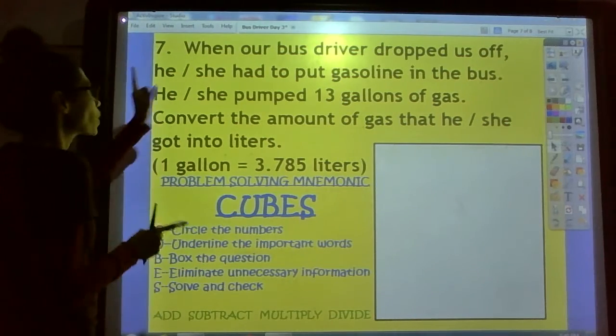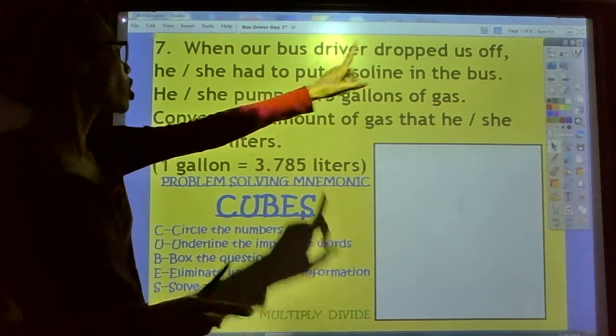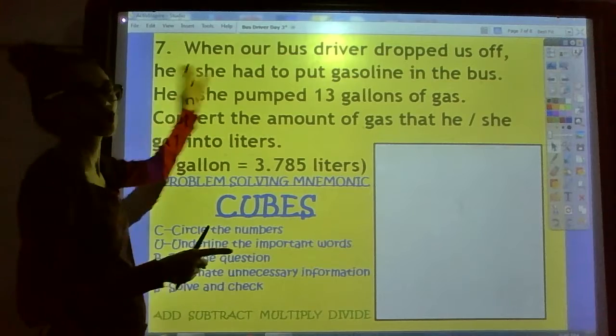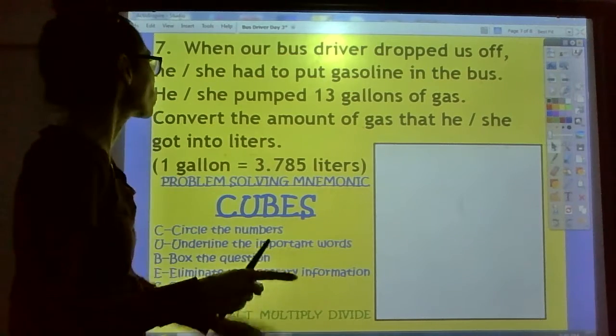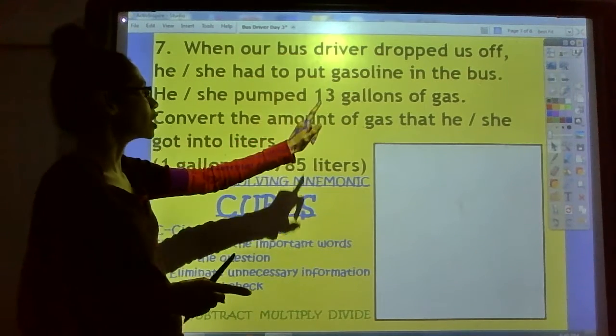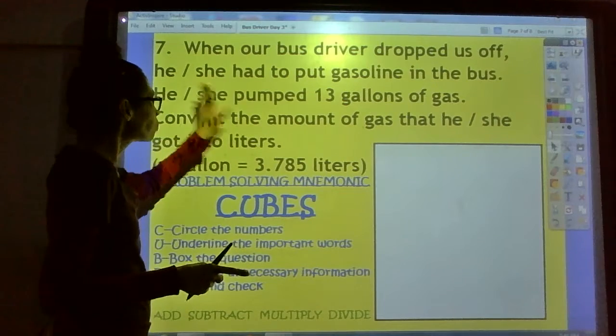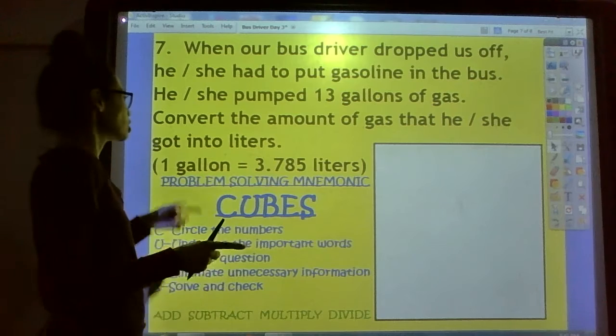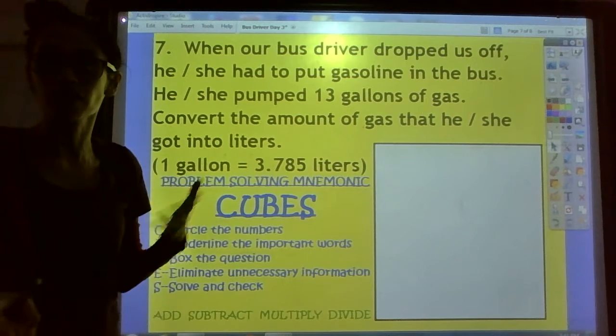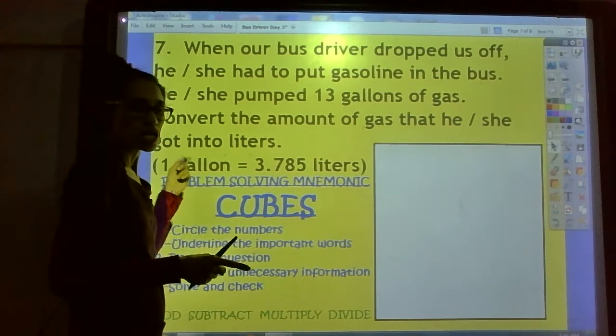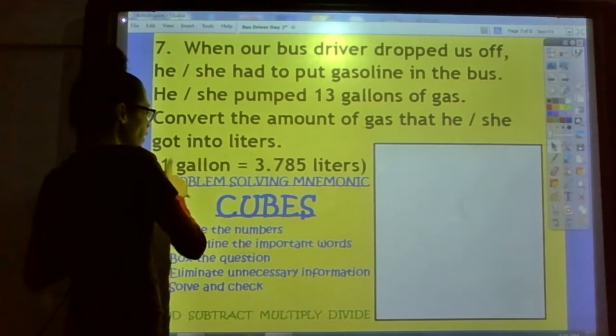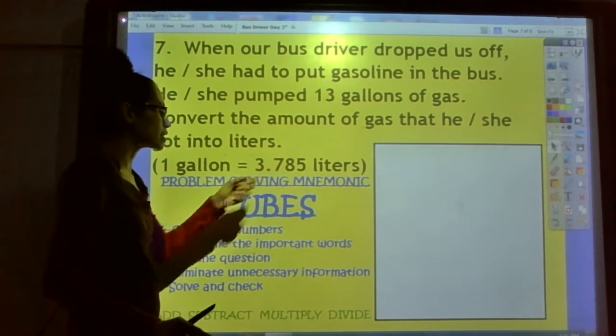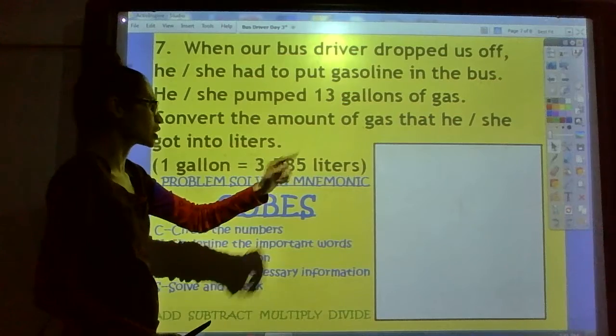It says, when our bus driver dropped us off, he or she, you can circle if you have a male or female bus driver, had to put gasoline in the bus. He or she pumped 13 gallons of gas. Convert the amount of gas that he or she got into liters. And here we have a conversion factor. It says 1 gallon equals 3.785 liters.